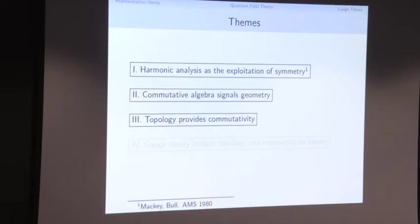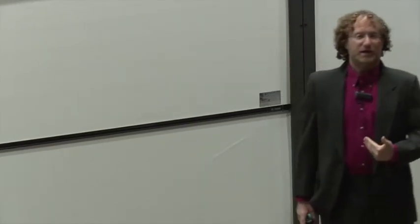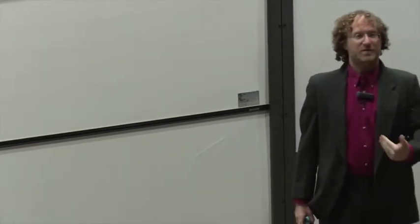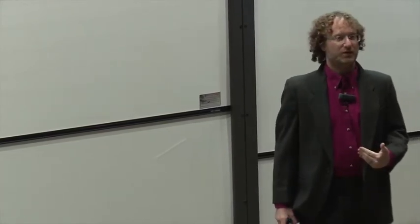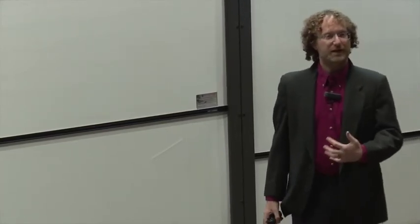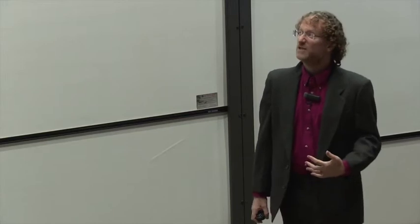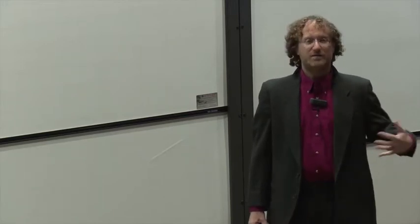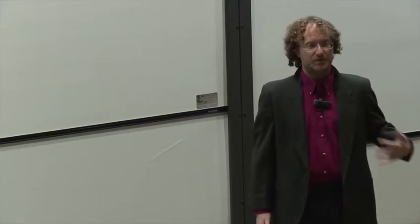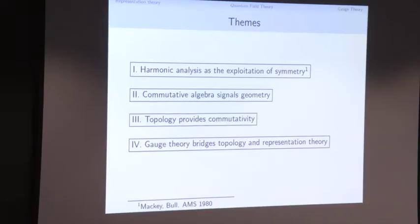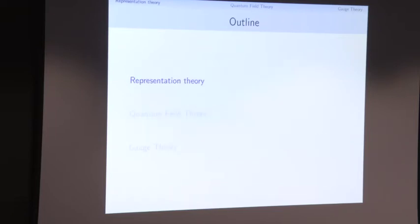The fourth and final theme I'd like to get to is the goal that gauge theory is a bridge from topology to representation theory. We're going to think of gauge theory as a way of encoding the structure of representation theory in the topology of low-dimensional manifolds. That's our goal — let's get going.